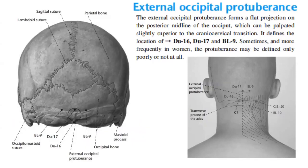Next, we have the external occipital protuberance. The external occipital protuberance forms a flat projection on the posterior midline of the occiput, which can be palpated slightly superior to the craniocervical transition. It defines the location of Du 16, Du 17, and Bladder 9. Sometimes, and more frequently in women, the protuberance may be defined only poorly, or not at all.